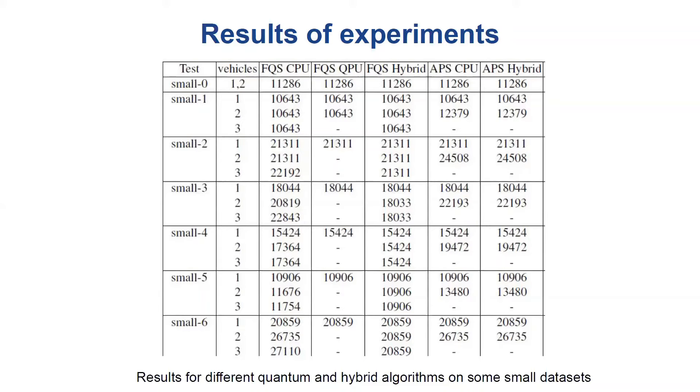Also, the required time of computations on QPU was worse than in the case of CPU or a hybrid approach. Therefore, we concluded that it doesn't make sense to run more experiments on QPU for larger test cases, with more cars and more orders, and we conducted next tests only using QBSolve on CPU and using a hybrid solver.